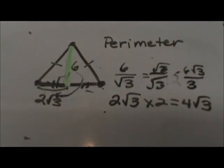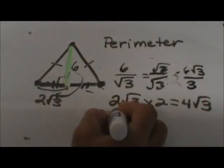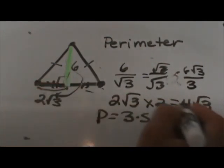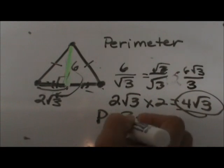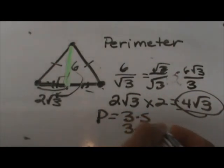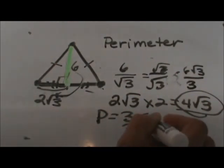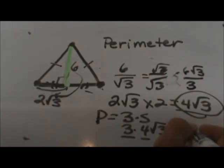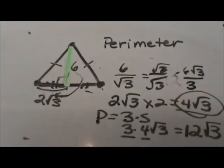Now I can apply my formula which is perimeter is equal to 3 times s where s is now 4 square root 3. So 3 times 4 square root 3 outside times outside gives me 12 square root 3. And that is how you would find the perimeter of an equilateral triangle given its altitude. Hope this video was helpful.